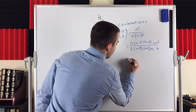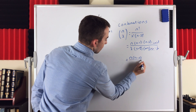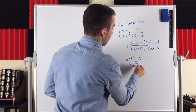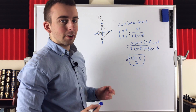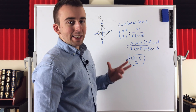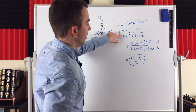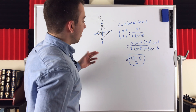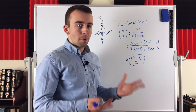We're just left with n times n minus 1 in the numerator, and in the denominator all we're left with is 2. Pretty beautiful. So that's the number of edges in a complete graph with n vertices. The reasoning is: it takes 2 vertices to make an edge, so the total number of edges in a graph with n vertices is the total number of ways we can select 2 vertices from n vertices. That number is the number of edges in a complete graph, because a complete graph has every possible edge.